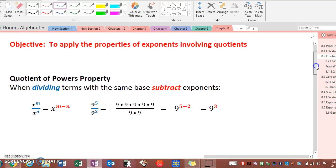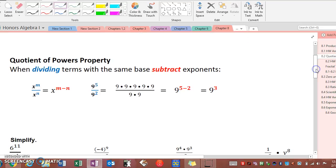In the quotient property we have a division problem, most of the time in the form of a fraction. What we can do in a division problem when terms have the same base is subtract their exponents.